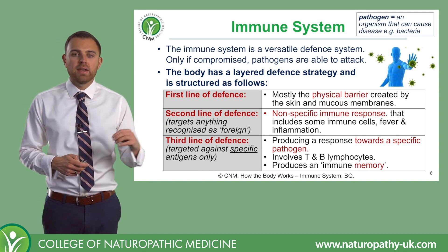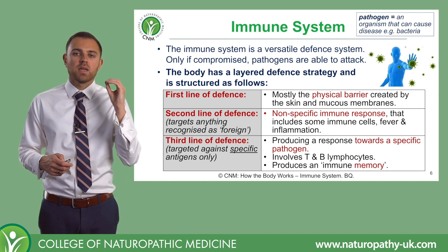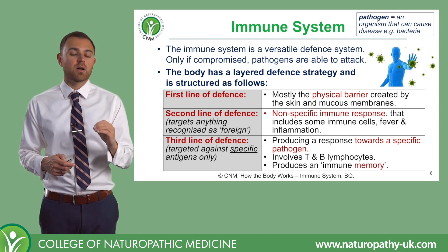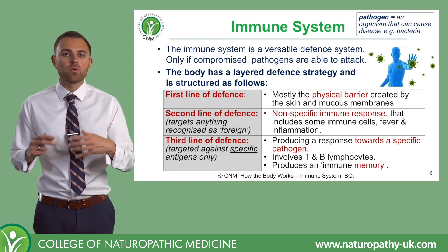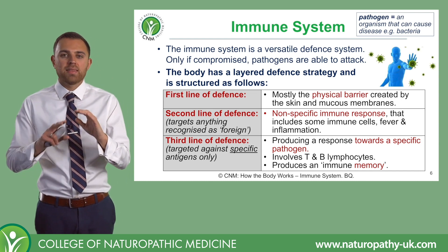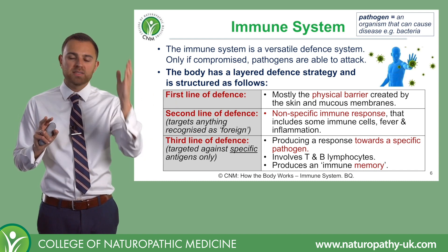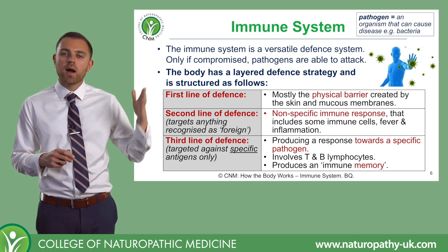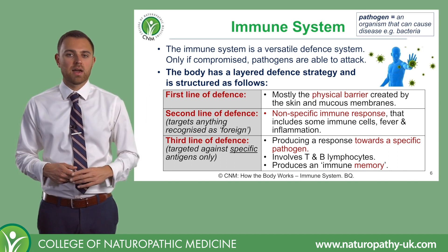The third line of defence is now specific, meaning that the targets will be very specific. The third line of defence is a little bit like MI5 or the FBI — they will only target specific individuals, drive past a burglary and ignore it, because they only have one target in mind, dealing with threats that have overcome the first and second lines of defence.